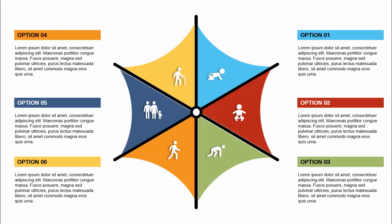In today's tutorial I'm going to show you how to create this six options infographic slide in PowerPoint. As you can see, I have designed this umbrella shape and added different colors to it. I have added icons and for each icon I have provided the option number and the detailed text.